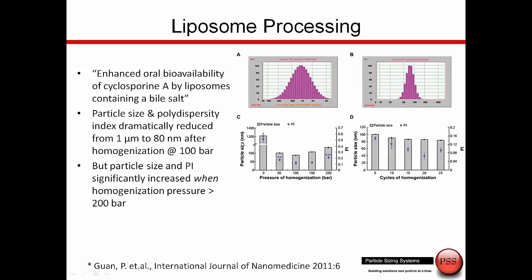A lot of people use a NICOMP for measuring liposomes. This paper was published talking about liposome processing — Enhanced Oral Bioavailability of Cyclosporine A by liposomes containing a bile salt. They're looking at the change in size and also the polydispersity, which is how we express the width of the distribution using dynamic light scattering, showing results before and after processing through a homogenizer.